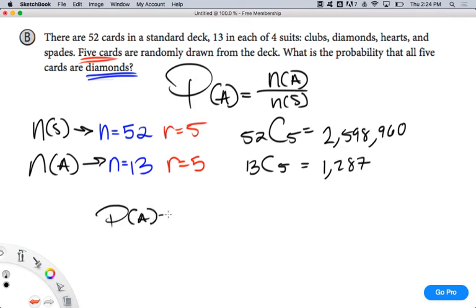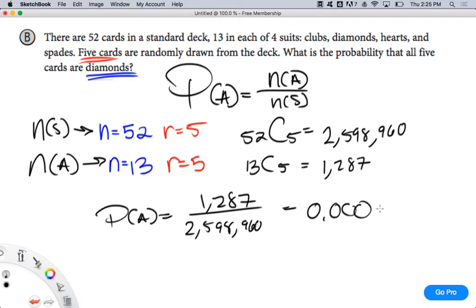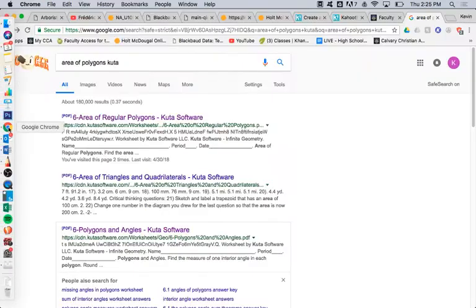PA, therefore, is 1,287 over 2,598,960. That's the probability. Does that make sense? Moving over 2 decimals would be the percentage.